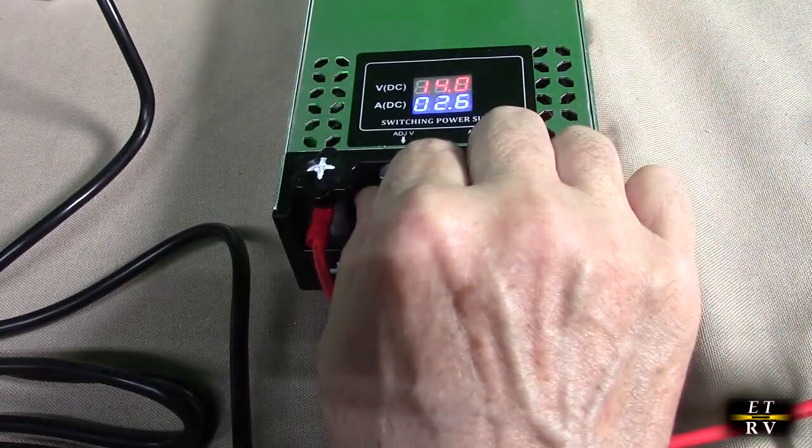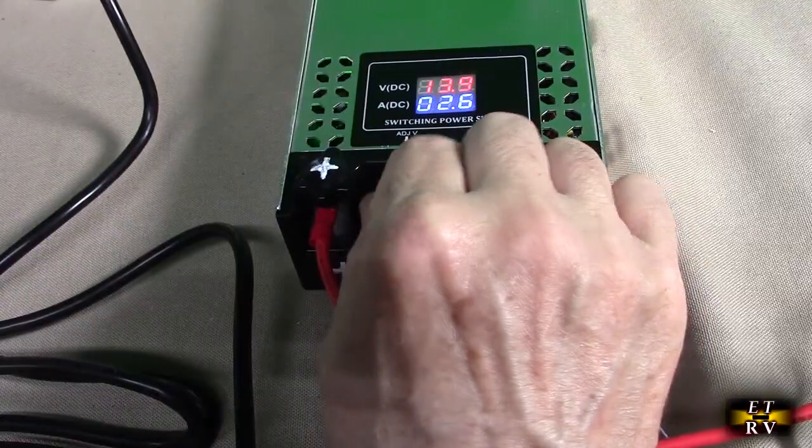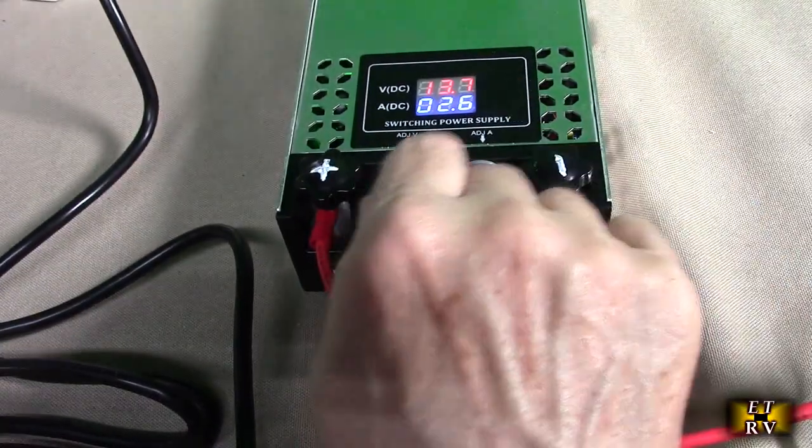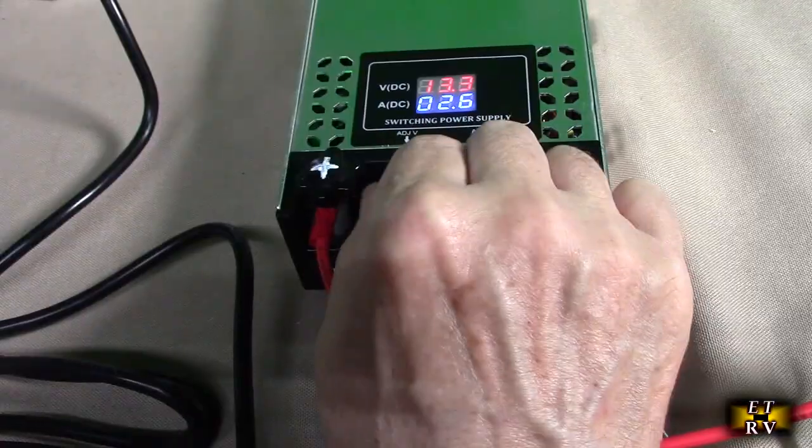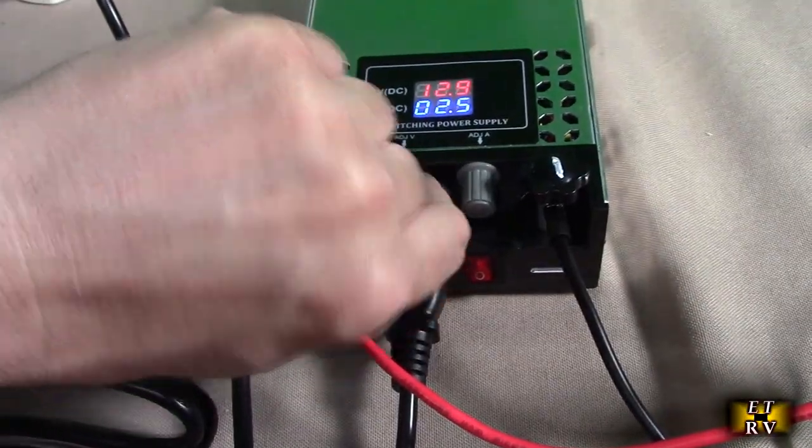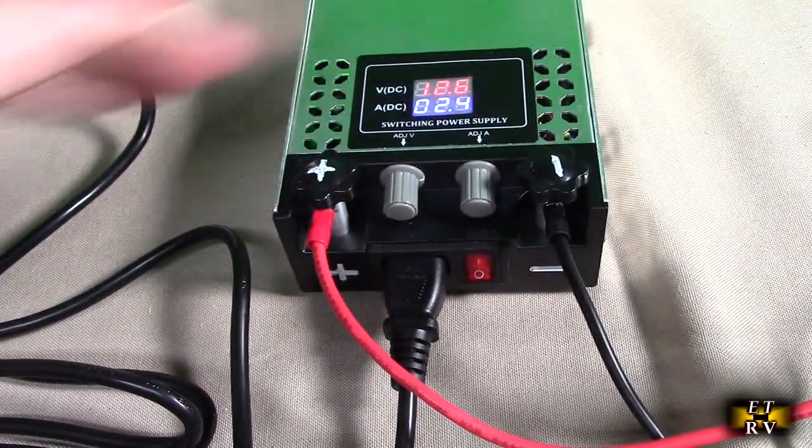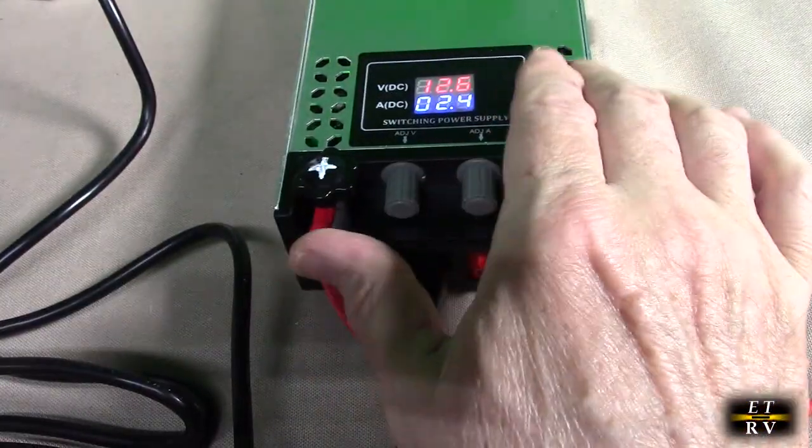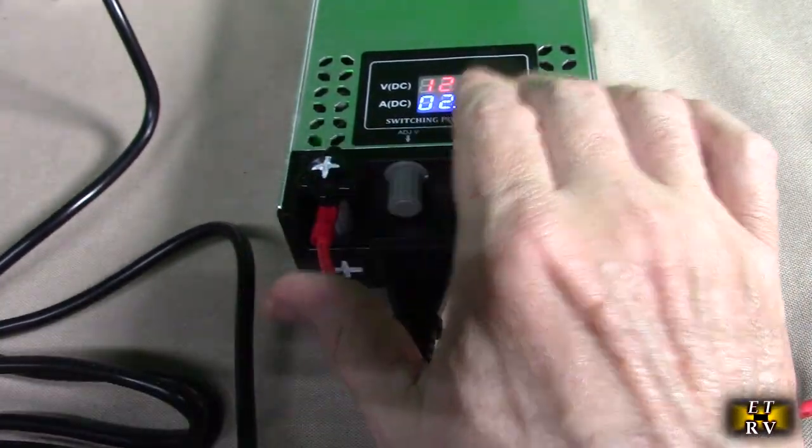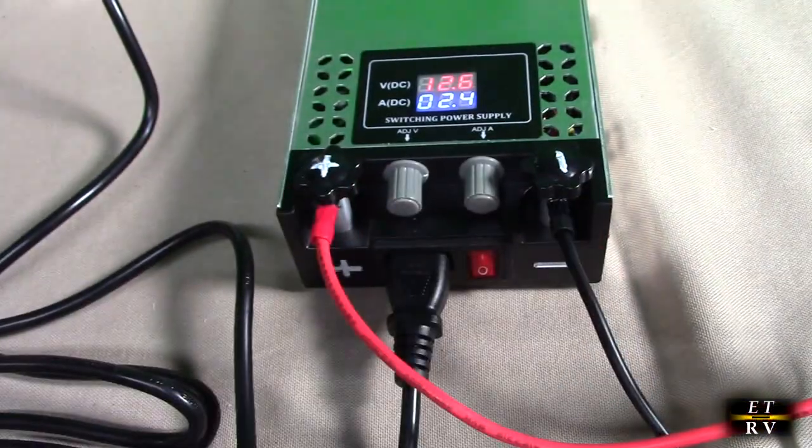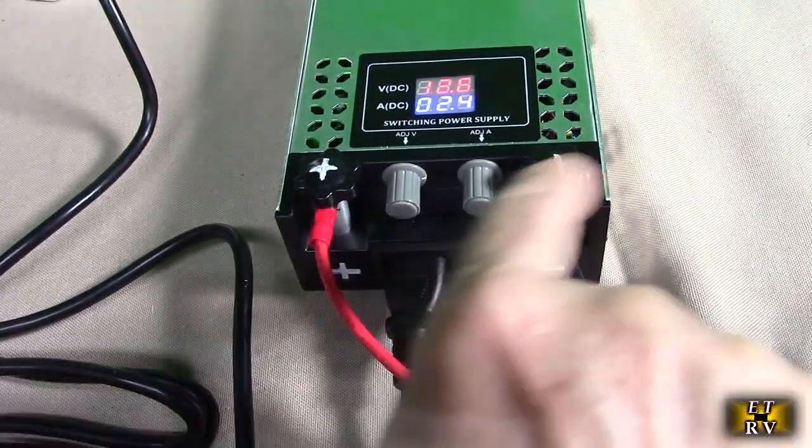A lot of times these power supplies are just fixed at 12 or 13.8 volts. This goes up to 15 and gives you a lot of control. As you can see I'm rotating that thing a lot to get a slight change. I love that. So if you have lithium polymer batteries or lithium phosphate and you want to quickly charge them with a DC supply, this is perfect for that.